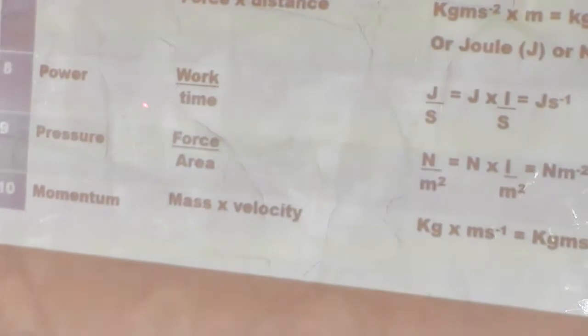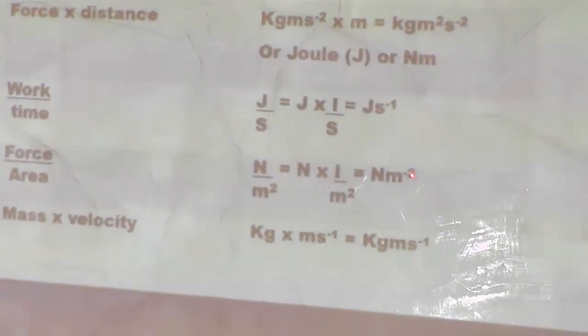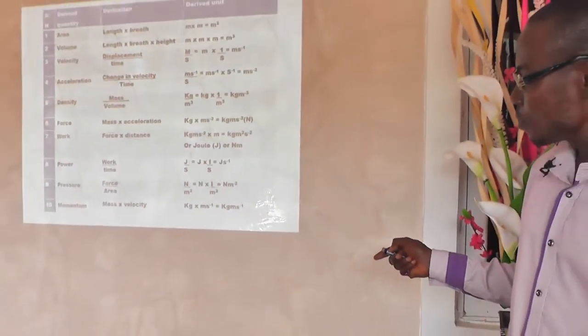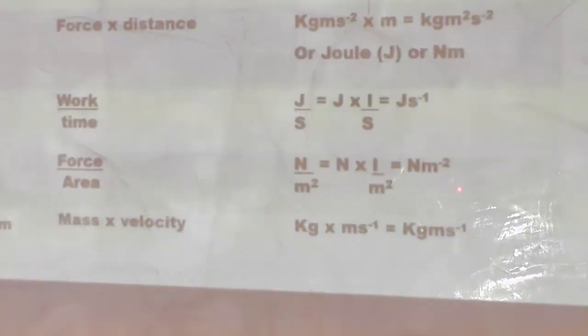Now let us look at pressure. Pressure is force divided by area. The unit of force is newton, and area is in meter square. Changing division to multiplication gives newton multiplied by 1 over meter square — using indices, the inverse of m² is m⁻², so we have newton per meter square. Therefore pressure can be measured in newton per meter square, which is the derived unit of this derived quantity.